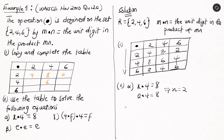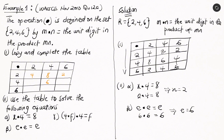For part (β): e ⊙ e = e — which number operated on itself gives itself? From the table: 2 ⊙ 2 = 4, not 2. 4 ⊙ 4 = 6, not 4. 6 ⊙ 6 = 6. So 6 ⊙ 6 = 6, which means e = 6.